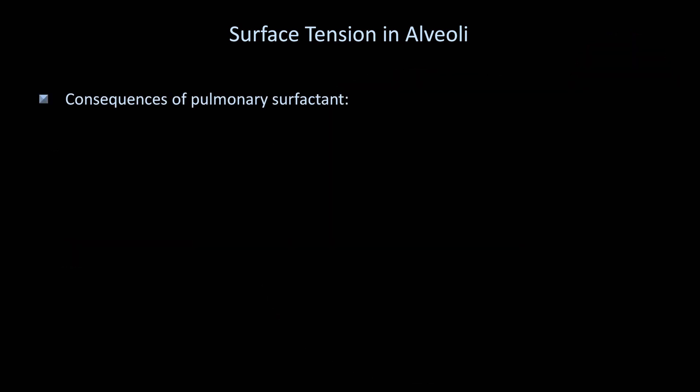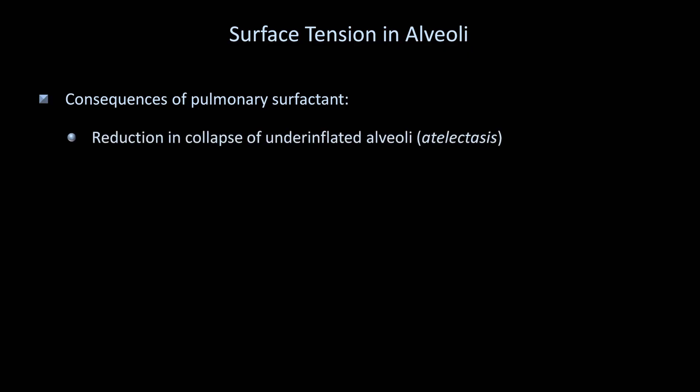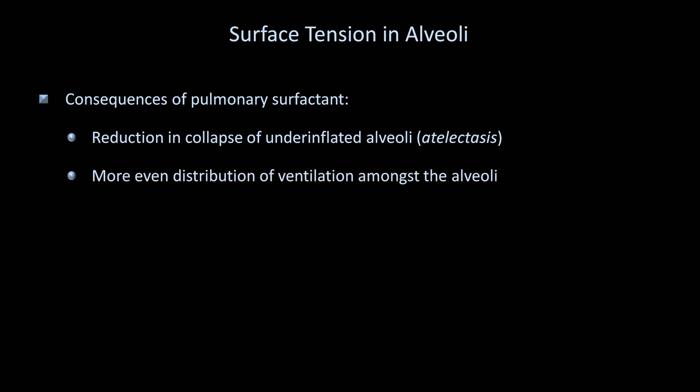So what are the net consequences of pulmonary surfactant? First, a reduction in the collapse of underinflated alveoli, otherwise known as atelectasis. Second, a more even distribution of ventilation amongst the alveoli, improving oxygenation. Third, it improves lung compliance.